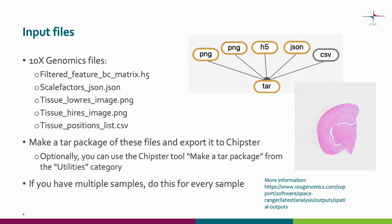Let's now take a closer look at the input files for this tool. You should give a tar package that contains these five 10x Genomics files. The first input file is the filtered feature barcode matrix in HDF5 file format. Make sure you use the filtered feature barcode matrix as opposed to the raw one. The second input file is the scale factors JSON file that contains the necessary scaling factors and numbers of pixels.